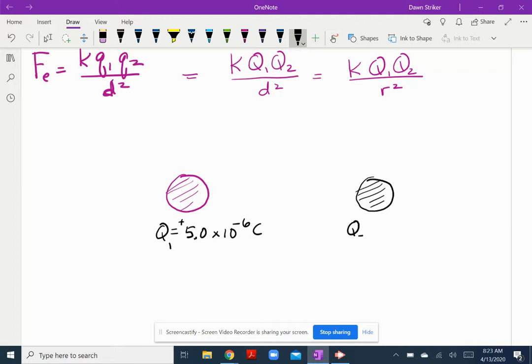And let's say this Q2 has also lost some of its electrons and it's got a positive charge of, how about, eight times ten to the negative six Coulombs. And if they've both lost some electrons so that they're both positively charged, I know that the force is going to be pointing away.